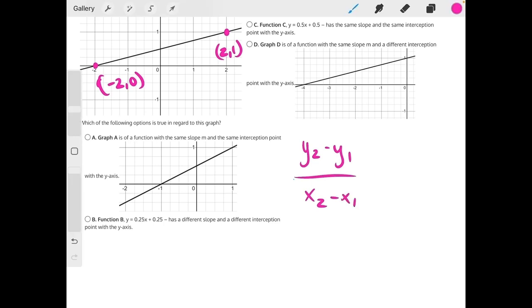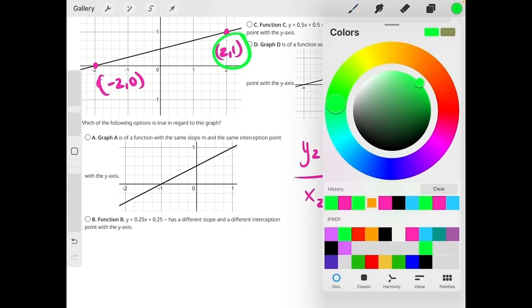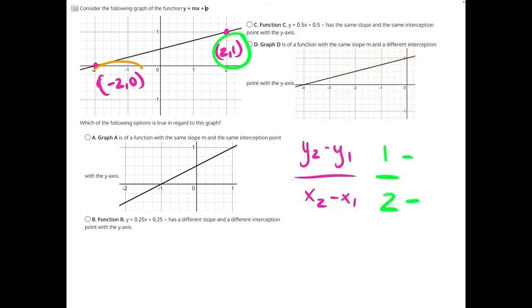Now, for my y2x2, I am going to choose these two numbers. So I will pick 1 and 2, subtract from my y1 and x1, which will be the other pair of coordinate points, 0 and negative 2.